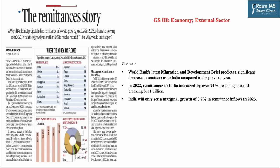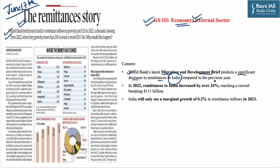The last topic of our session is based on a news article that appeared in Indian Express on June 17th. This article talks about the trend of remittances based on the World Bank's report. It forms an important part of the economy syllabus on the external sector. The World Bank's latest Migration and Development Brief report predicts a significant decrease in remittances to India compared to the previous year. In 2022, remittances to India increased by over 24%, reaching a record $111 billion. India will see only a marginal growth of 0.2% in remittance inflows in 2023.